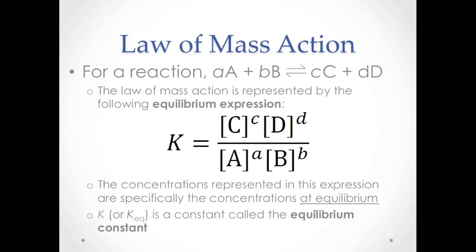Chemical equilibria and equilibrium positions are governed by the law of mass action. For the generic reaction shown, in which capital A and capital B represent reactants in equilibrium with products represented by capital C and capital D, and the lowercase letters a, b, c, and d are their respective stoichiometric coefficients, the law of mass action is represented by the equilibrium expression. The product of the molar equilibrium concentrations of the products raised to their stoichiometric coefficients, divided by the product of the molar equilibrium concentrations of the reactants raised to their stoichiometric coefficients, is equal to K. K is called the equilibrium constant. The equilibrium constant is considered unitless and is specific for each reaction at a certain temperature.